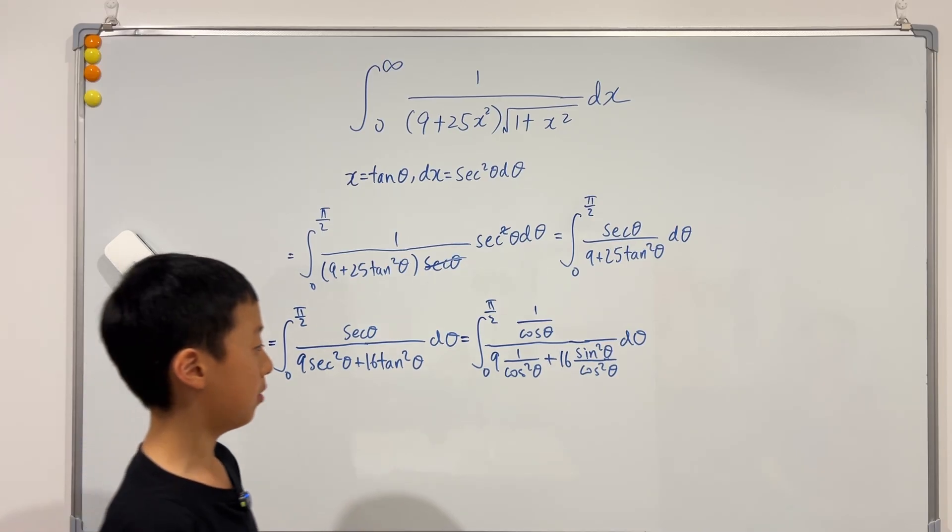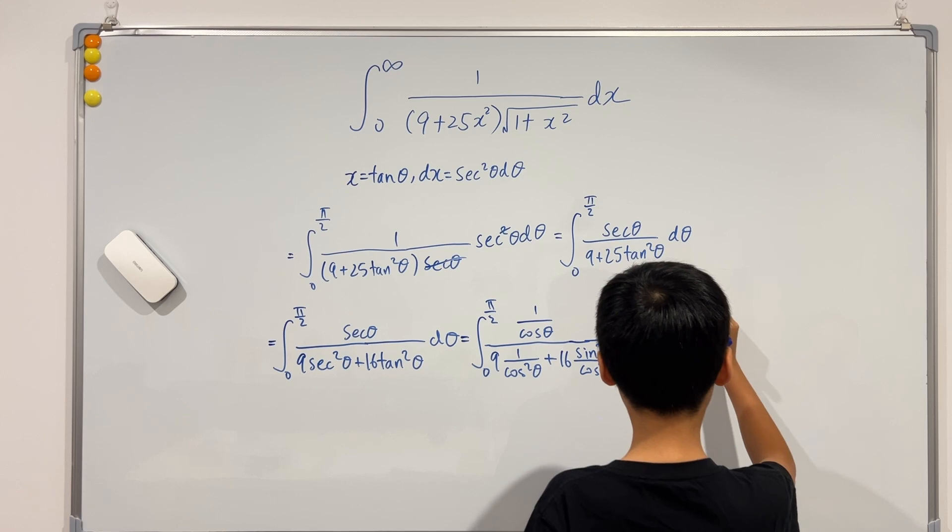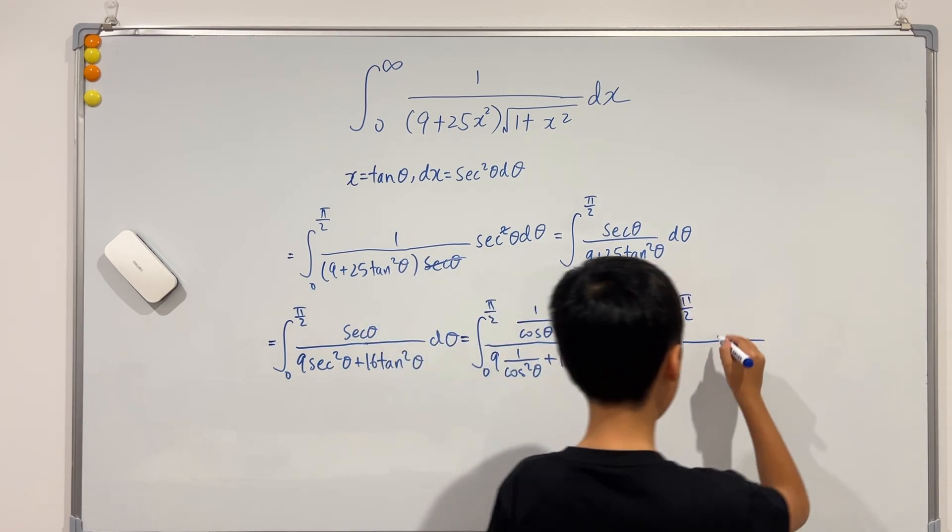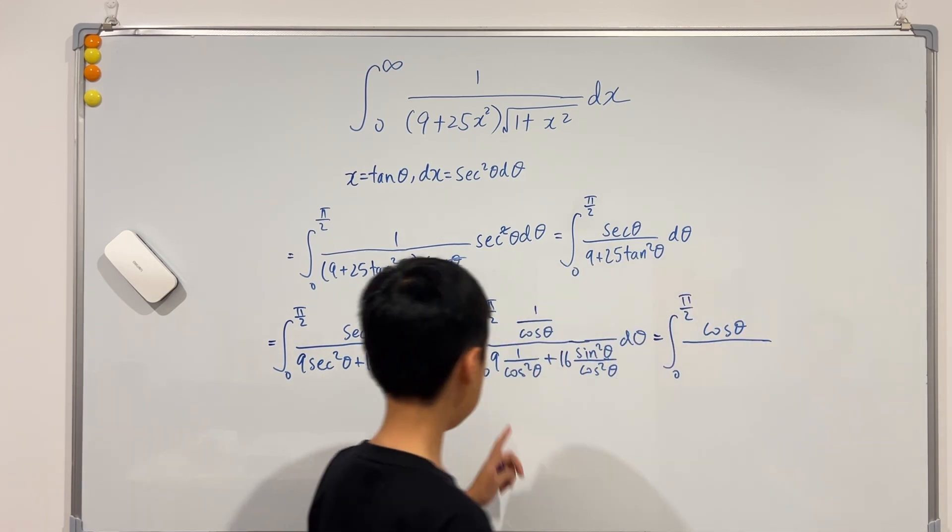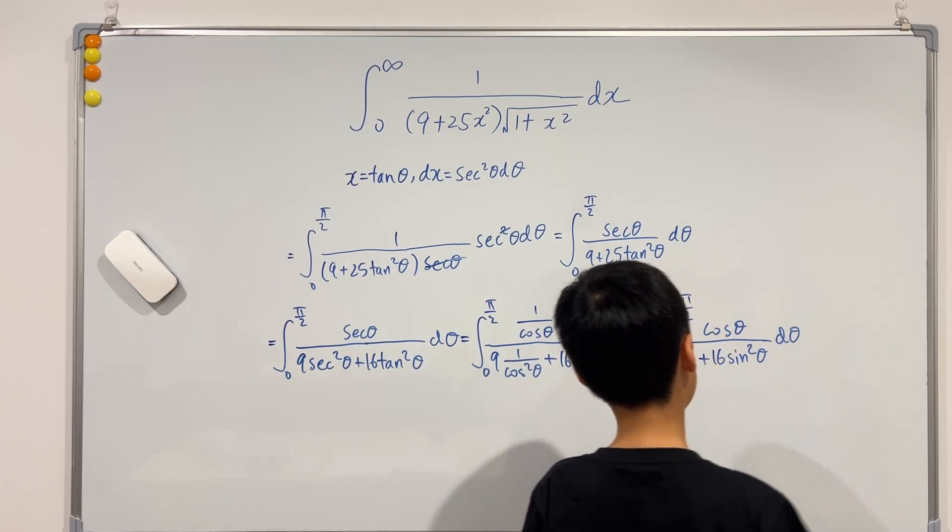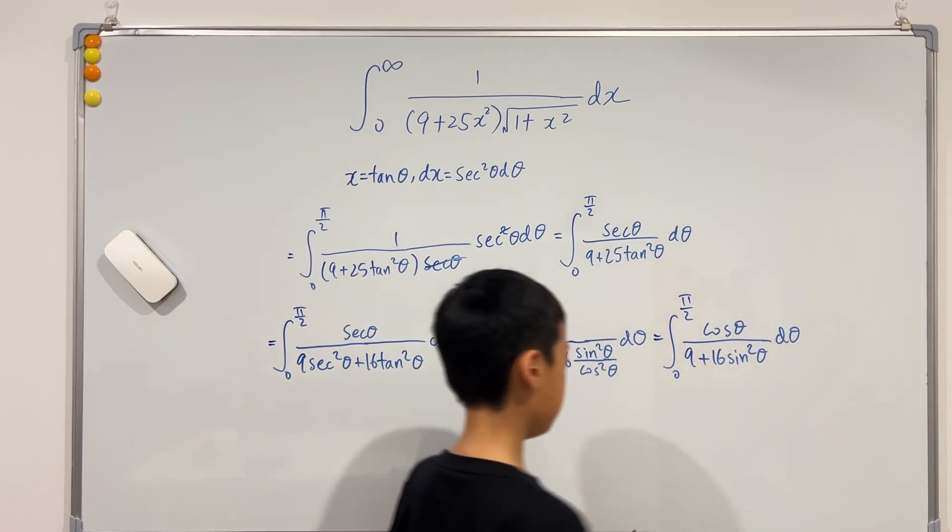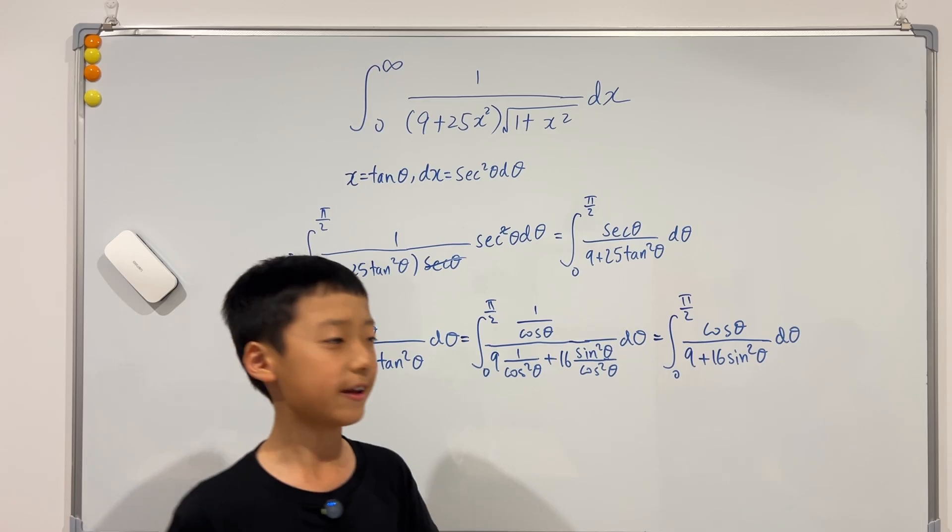So now I'm going to multiply the top and bottom by cosine squared. The top will just be cosine. The bottom will just be 9 plus 16 sine squared. So now what I'm going to do is put this over here, so it becomes d sine theta.